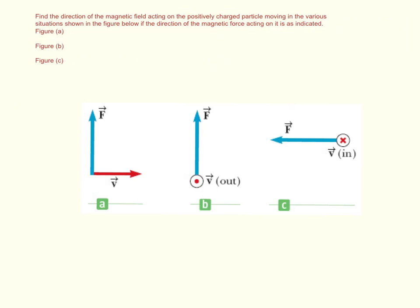Find the direction of the magnetic field acting on the positively charged particle moving in various situations shown in the figure below if the direction of the magnetic force acting on it is indicated.